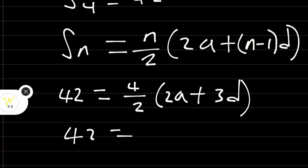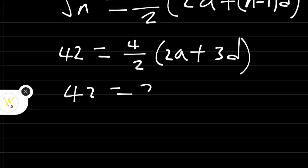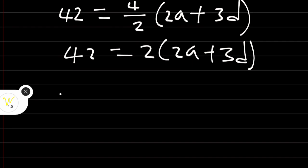Let's evaluate this further. We have 42 is equal to 4 divided by 2, we have 2 into bracket 2A plus 3D. Divide both sides by 2. We have 21 is equal to 2A plus 3D. Equation 2.